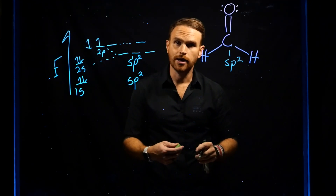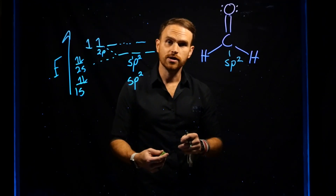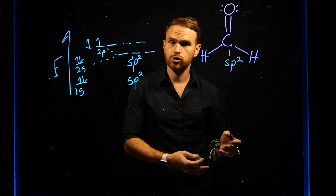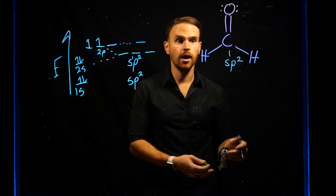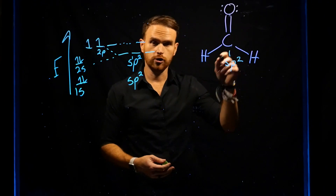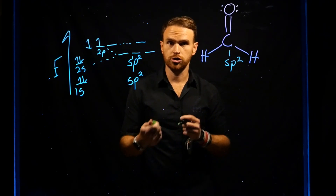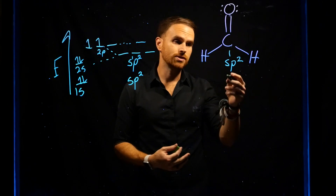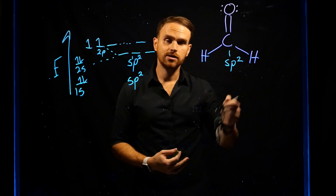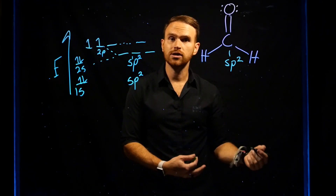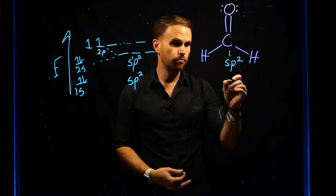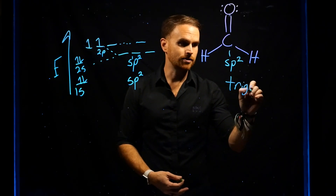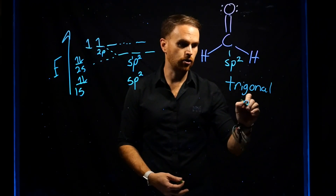Another concept from VSEPR theory is that you determine the electron or molecular geometry of molecules to figure out their three-dimensional shape. One of the things you should know is that sp2 hybridized molecules always form trigonal planar molecular geometry — that's trigonal planar.